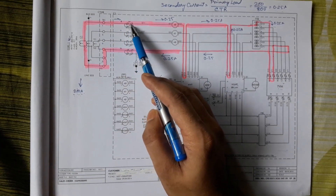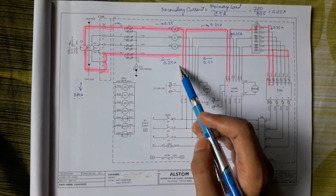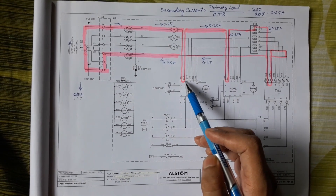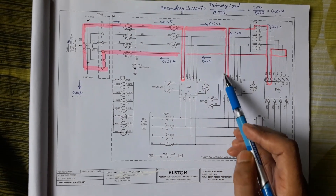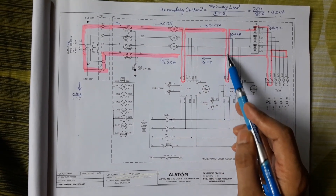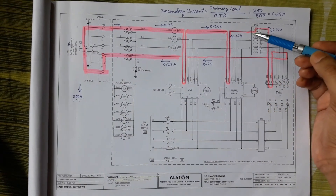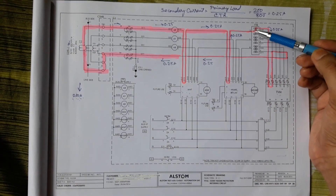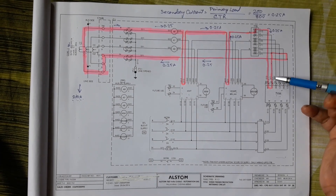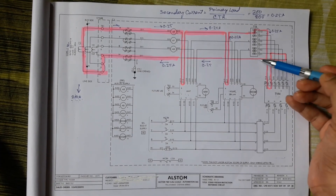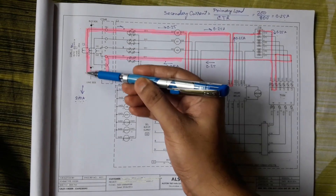The 0.25 ampere will flow through the ammeter first, then go to a megawatt meter, then to a megavar meter, then to a TTB terminal block. If those two terminals are shorted, it will flow through the trivector meter or energy meter and then the current will return to CT secondary in the field.